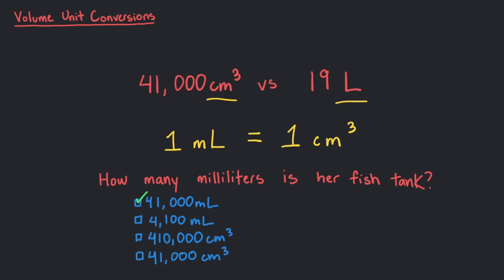That's right! We can multiply the 41,000 cubic centimeters by the conversion factor one milliliter over one cubic centimeter. This way, we have cubic centimeters on both the top and bottom, letting us cancel out the units.